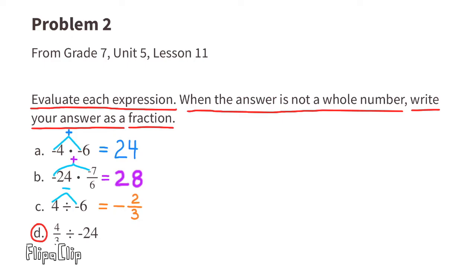Part d: 4/3 divided by negative 24. That's a positive divided by a negative, so we know the answer is going to be a negative. We can rewrite this as 4/3 divided by 24/1. We can solve this by multiplying by the reciprocal of 24/1, which is 1/24. Cross canceling: 4 goes into 4 once, and 4 goes into 24 six times. Multiply straight across: 1 times 1 equals 1, and 3 times 6 equals 18. So the answer is negative 1/18.